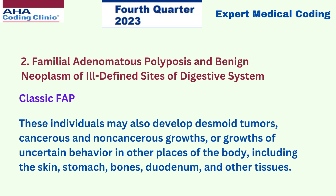These individuals may also develop desmoid tumors — cancerous and non-cancerous growths, or growths of uncertain behavior — in other places of the body including the skin, stomach, bones, duodenum, and other tissues.